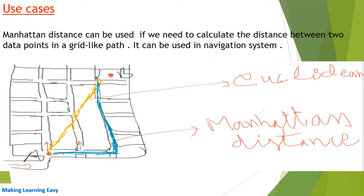We cannot follow the yellow line because in between there are buildings and we cannot jump over them. So we have to follow the street, which is shown in blue. If we follow this blue line, it would be the Manhattan distance to move from A to B — that would be the Manhattan distance. The formula has been discussed in the last slide.